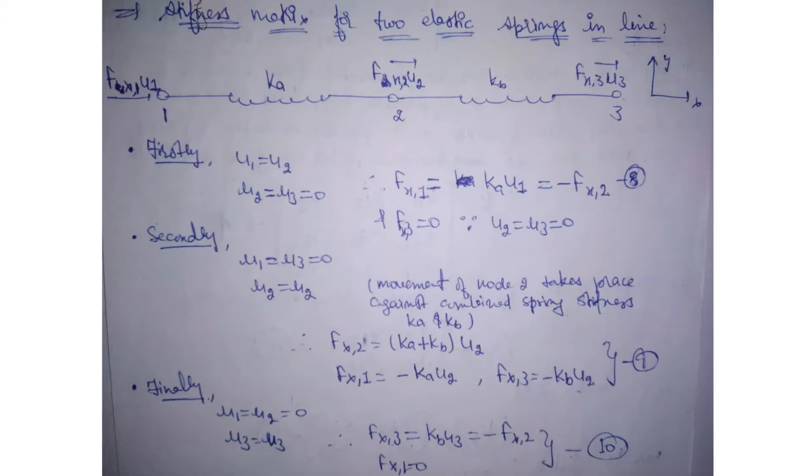Secondly, we will do U1 equals U3 equals 0 and U2 will be U2. Then what is the moment when node 2 takes place against combined spring stiffness Ka and Kb? Node 2 is connected to both nodes 1 and 3, so the combined stiffness will be Ka plus Kb. Fx2 equals (Ka + Kb)·U2, and the force here due to node 2 is minus Ka·U2, and Fx3 force is minus Kb·U2.